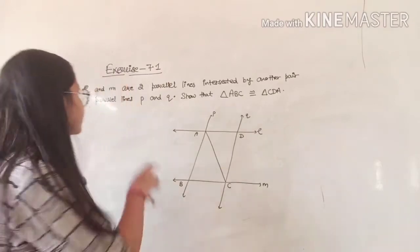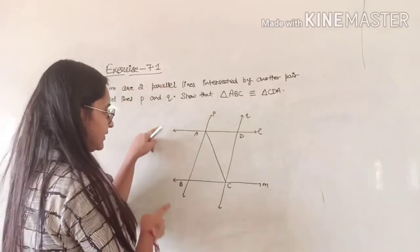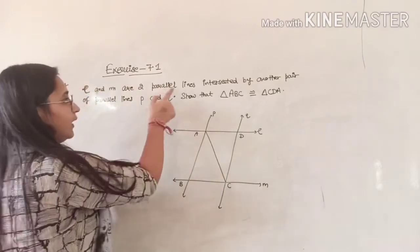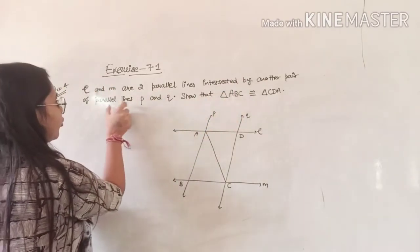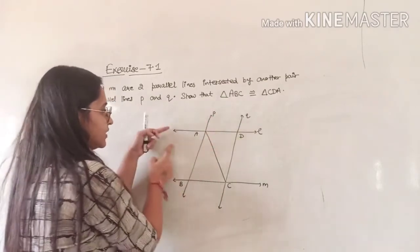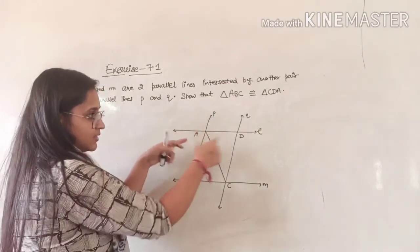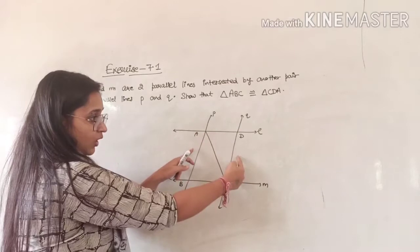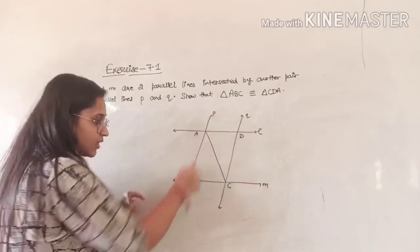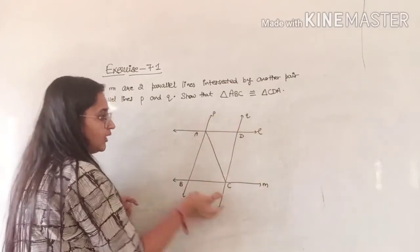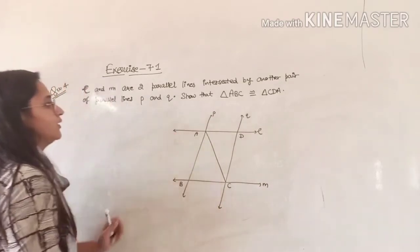Question 4 involves lines L and M, which are two parallel lines, intersected by another pair of parallel lines P and Q. So L and M are two parallel lines, and P and Q are also two parallel lines.